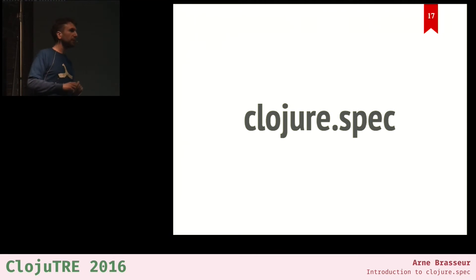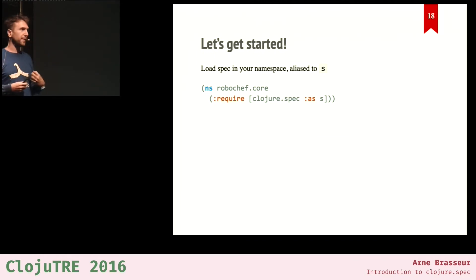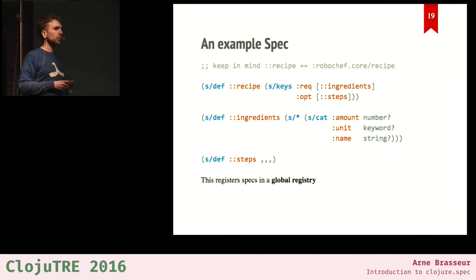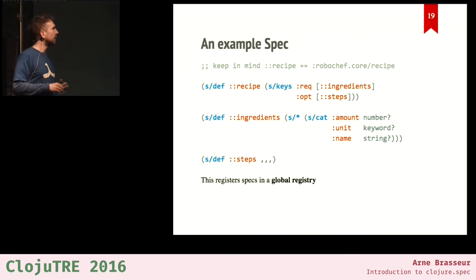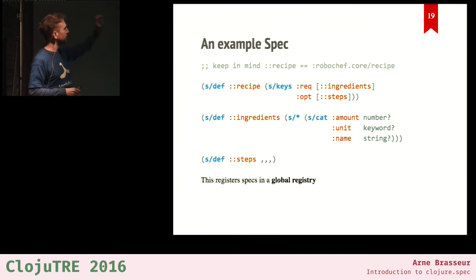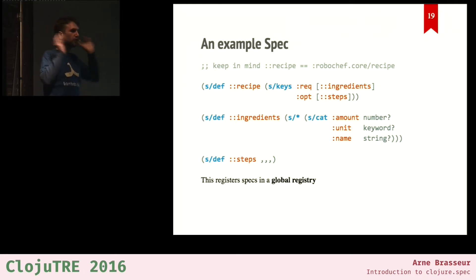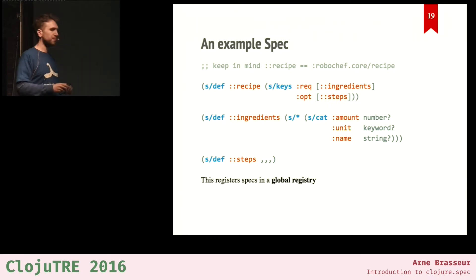Onto the actual Clojure spec. You start by including the clojure.spec namespace, aliased as 's' by convention. You define specs with the s/def function, which takes two arguments: a namespace keyword as the name of the spec, and then a spec object — a specification. So I'm defining a recipe spec, an ingredients spec, a steps spec, and all of these are registered in a global registry by name.